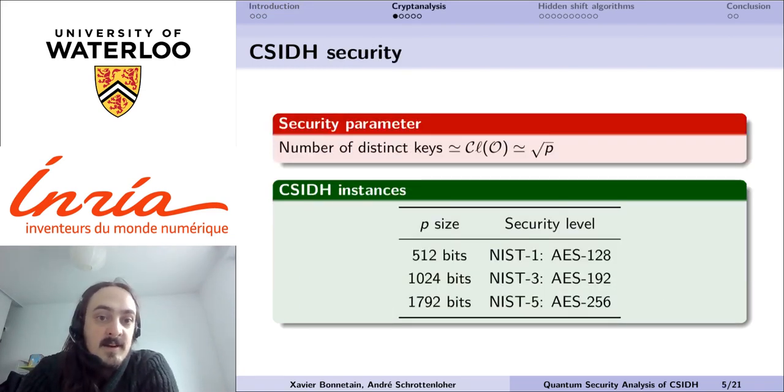Now that we've seen CSIDH, for the security, the base security parameter is the number of distinct keys, so of distinct isogenies, which is roughly the size of the class group, which itself is close to the square root of p. From that, the authors have proposed three instances of CSIDH, from 512 bits to 1792 bits.